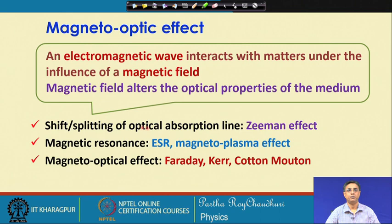When an electromagnetic wave interacts with matter under the influence of a magnetic field, the magnetic field alters the optical properties of the medium. This manifests primarily in terms of polarization and also in the change in intensity of the input light. It appears in the form of a phase shift or splitting of the optical absorption line, which is popularly known as the Zeeman effect.